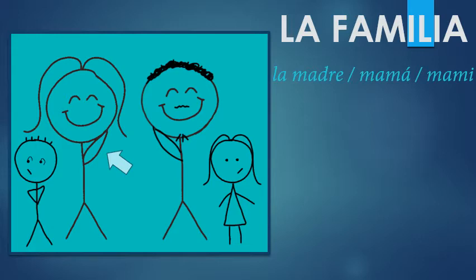In English, if you're more than three years old, she's not your mommy anymore — she's your mom. But that doesn't really exist for Spanish speakers. They'll call their mother mami if they're 50 years old. They actually prefer mami. La madre — very formal. Mamá is that middle ground. But be aware: mami is very common.